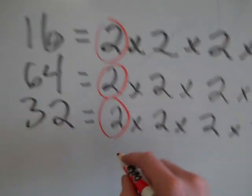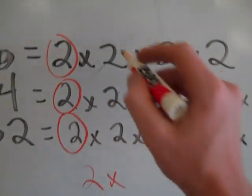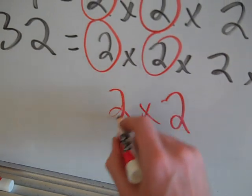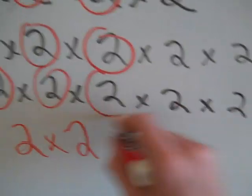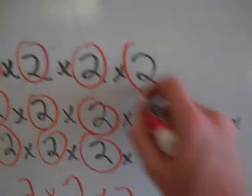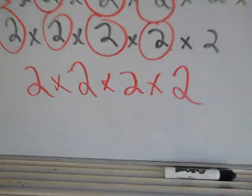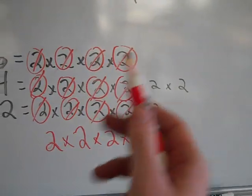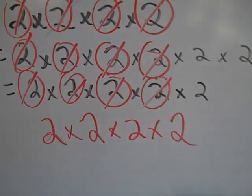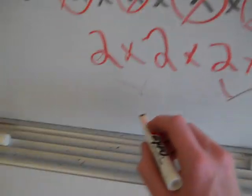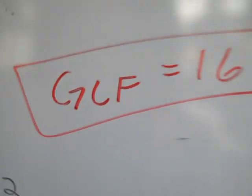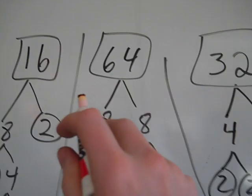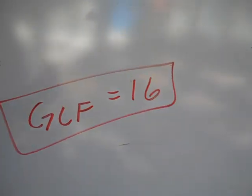Now I look again — they all have one 2, they all have a second 2, they all have a third 2, and they all have a fourth 2. Every one of these numbers had four 2's as part of its prime factorization. So I'm going to multiply these four 2's together to get my GCF. That's 2 times 2 times 2 times 2 — that's 4 times 4, which is 16. The GCF equals 16. Of course it fits into 16, it fits into 64, and it fits into 32.